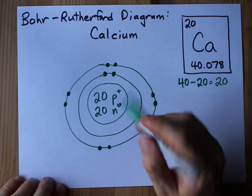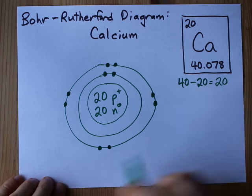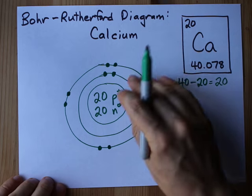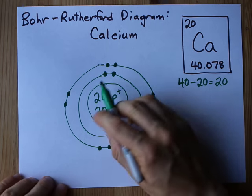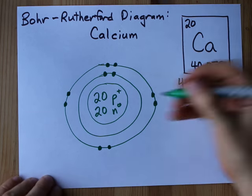We need, sorry, 10 electrons total that we've drawn so far in the first and second shells combined. Now we need 20, so we need 10 more.